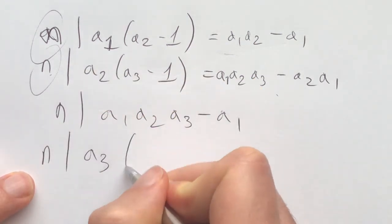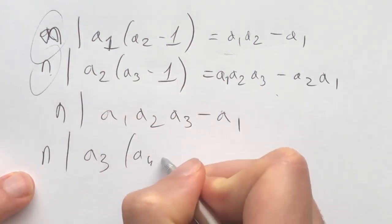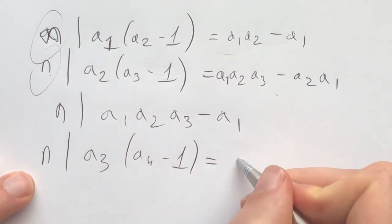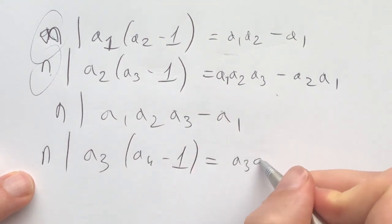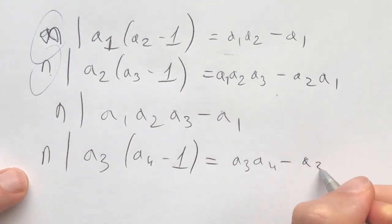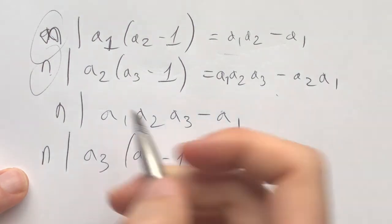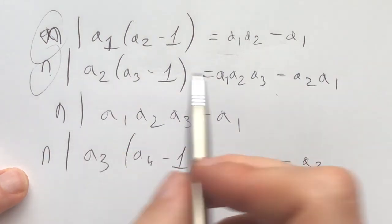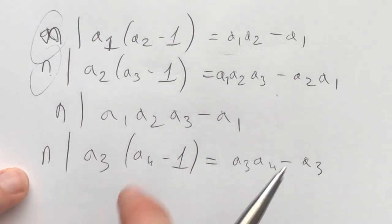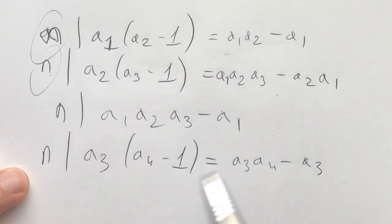I also looked at n divides a3 times a4 minus 1, which is a3 times a4 minus a3. I invite you to take a pause for 5 to 10 minutes and see what you would do here. The goal is just to play with it and see what you find — ideally try to finish the problem.